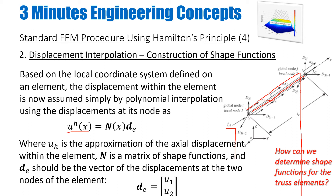So my displacement anywhere in the element can be given by the interpolation functions — we call it bold N — and the displacements at the nodes. If I know the displacements at the nodes (which can be boundary conditions) and if I know my interpolation functions, I can interpolate the displacements anywhere inside my element. So u is approximately equal to N times d, where N is the matrix of shape functions and d is the vector of nodal displacements. In this case we have two degrees of freedom: u1 and u2.